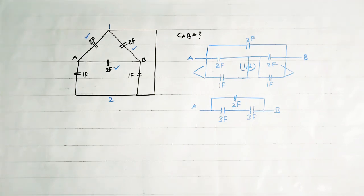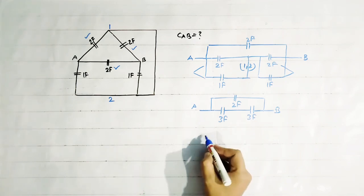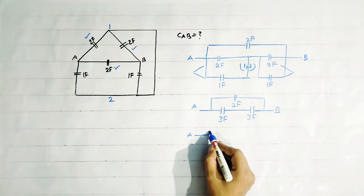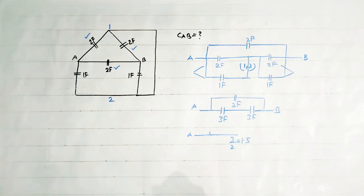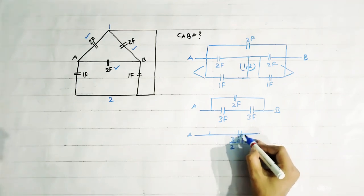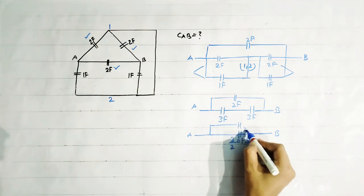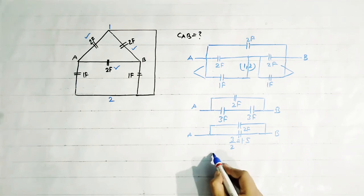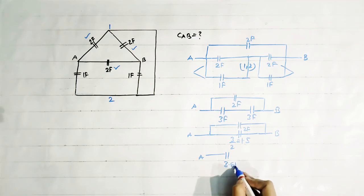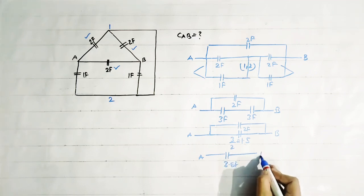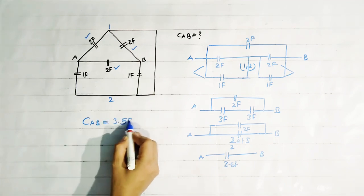What is the total capacitance? These two 3 Farad capacitors have an equivalent capacitance equal to 3 by 2, which equals 1.5 Farad. So that equals 3.5 Farad, which is connected in parallel with this 2 Farad capacitance. Finally, we get: between point A and point B, the total is 3.5 Farad. So CAB equals 3.5 F, which is the solution of this question.